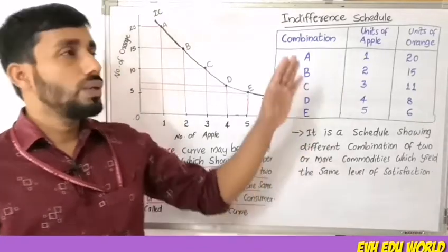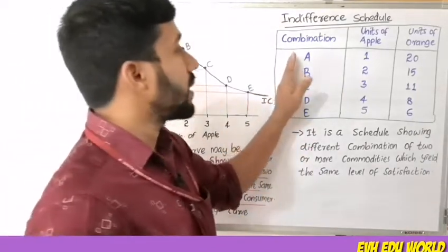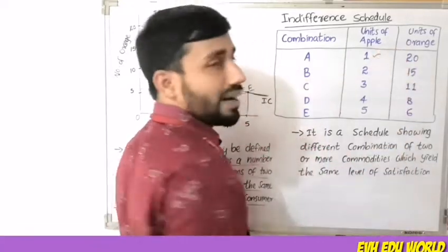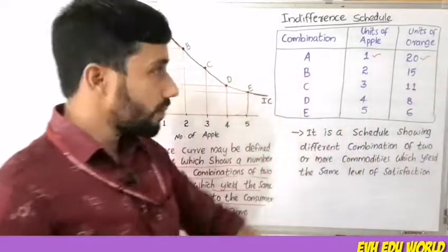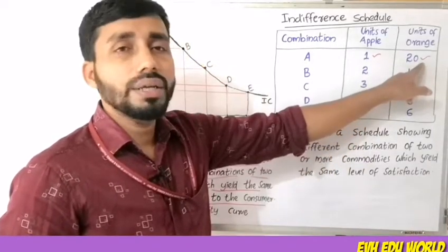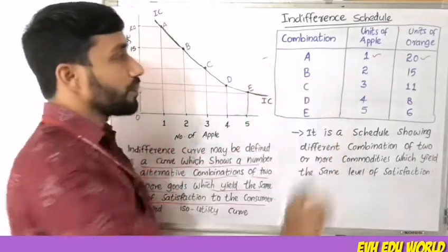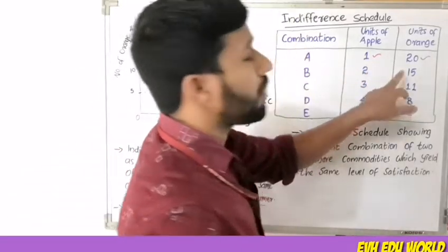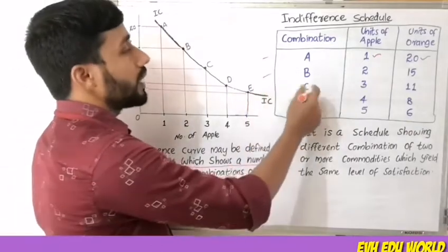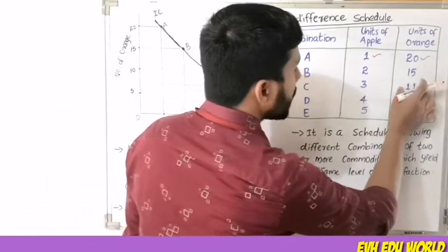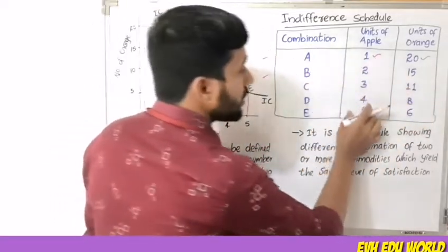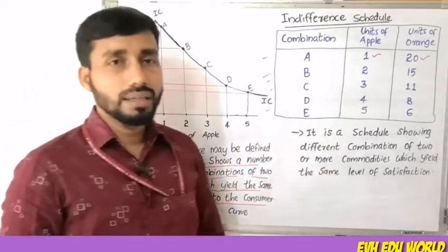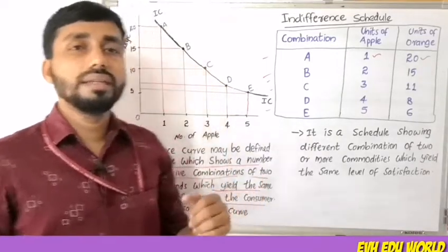For example, consider a table with combinations. Combination A has 1 unit of apple and 20 units of orange. Combination B has 2 apples and units of orange. Combination C has 3 apples and 15 oranges. Combination D has 4 apples and 8 oranges. Combination E has 5 apples and 6 oranges. This set of combinations is what we call an Indifference Curve.